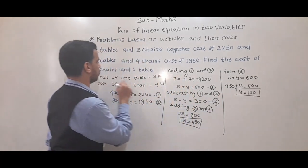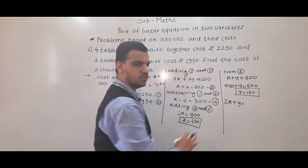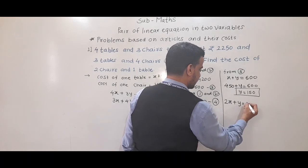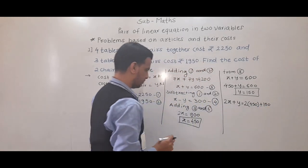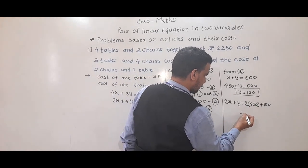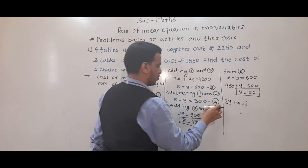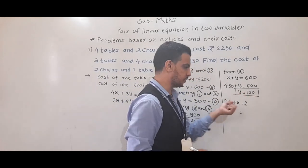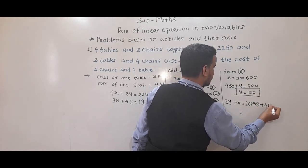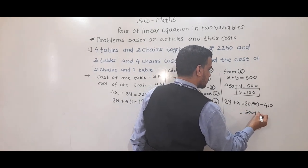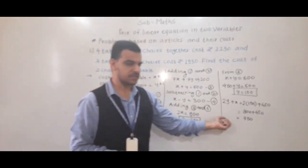Now we have to find the cost of 2 chairs and 1 table together, which is 2y plus x. So 2 into 150 plus 450: 2 into 150 is 300, plus 450 gives 750. So 2 chairs and 1 table cost 750 rupees.